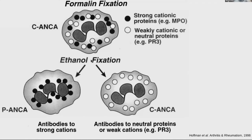When you add ethanol to neutrophils, the positively charged MPO migrates toward the negatively charged nucleus, producing a P-ANCA or perinuclear ANCA pattern. P-ANCA is really an artifact created by adding ethanol, causing the positively charged particles to move toward the nucleus.